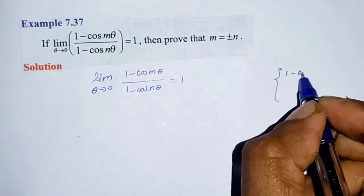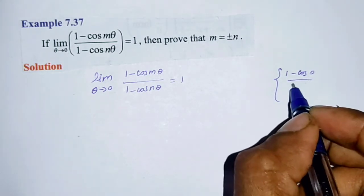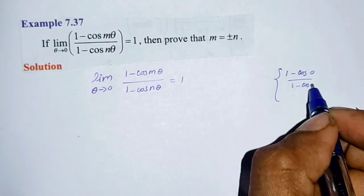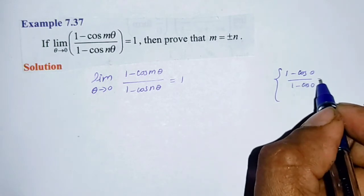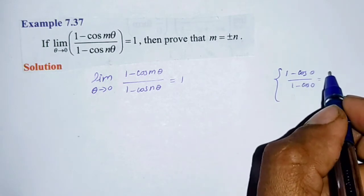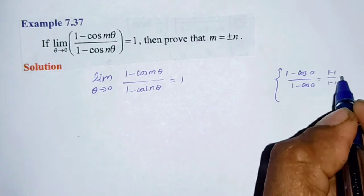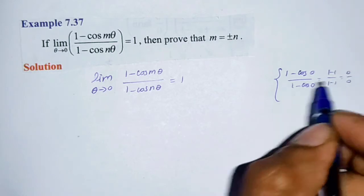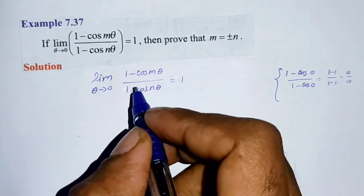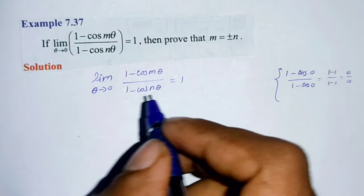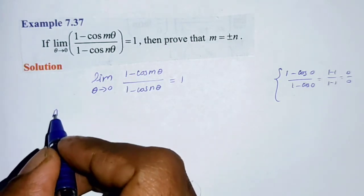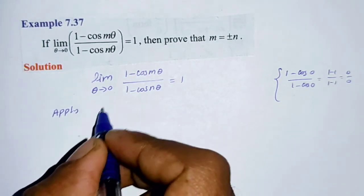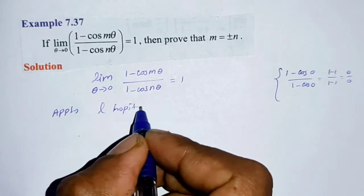Substituting theta equals 0 gives 1 minus 1 divided by 1 minus 1, which is 0 divided by 0 — an indeterminate form. So we need to apply L'Hôpital's rule.